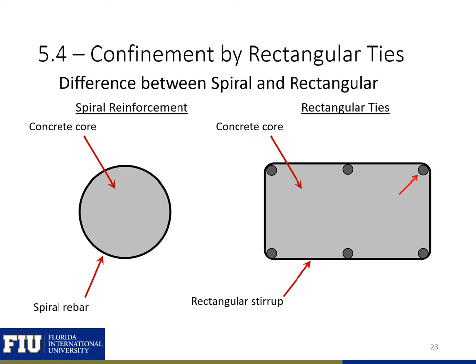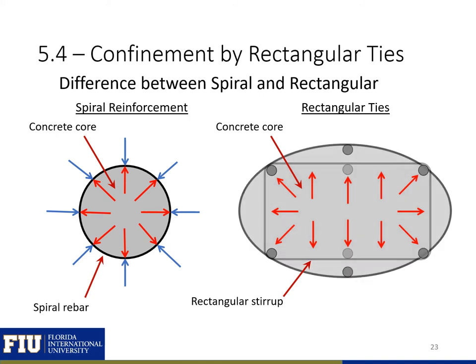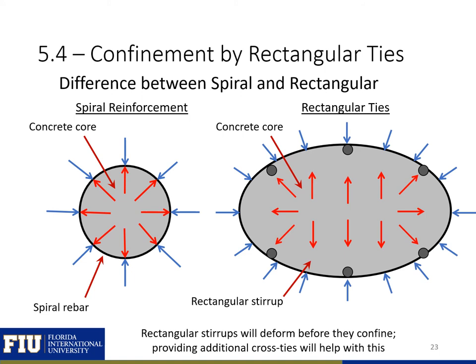Confinement can also be provided using rectangular ties. In both cases — spiral and rectangular — we have some reinforcement surrounding a concrete core. In the spiral reinforced case, as we load the column in compression, the concrete wants to expand and the spiral reinforcement directly resists this expansion. In the case of rectangular ties, as the core concrete wants to expand, our ties need to slightly deform to resist this expansion, meaning rectangular ties are not going to be as effective in confining the core concrete.